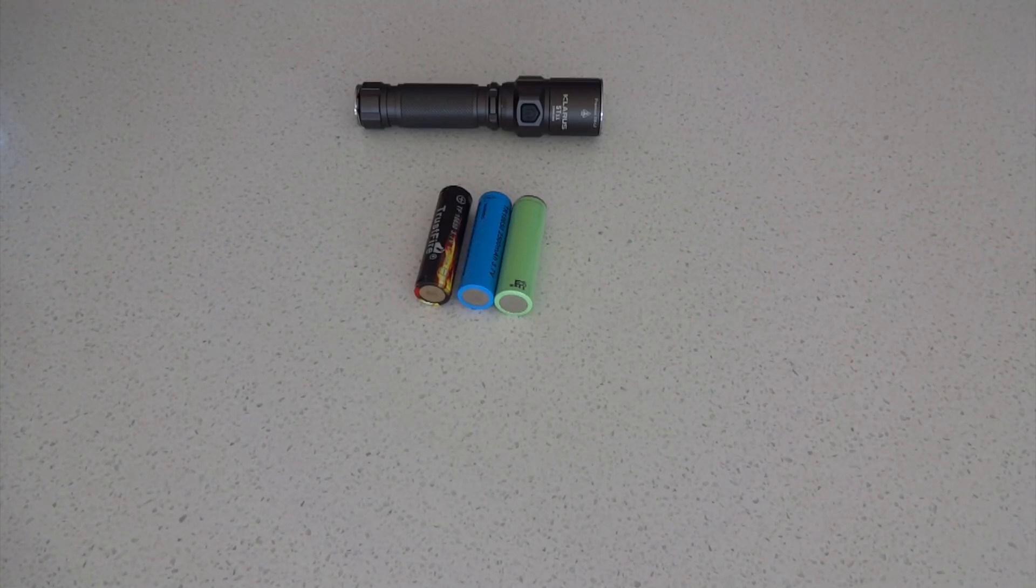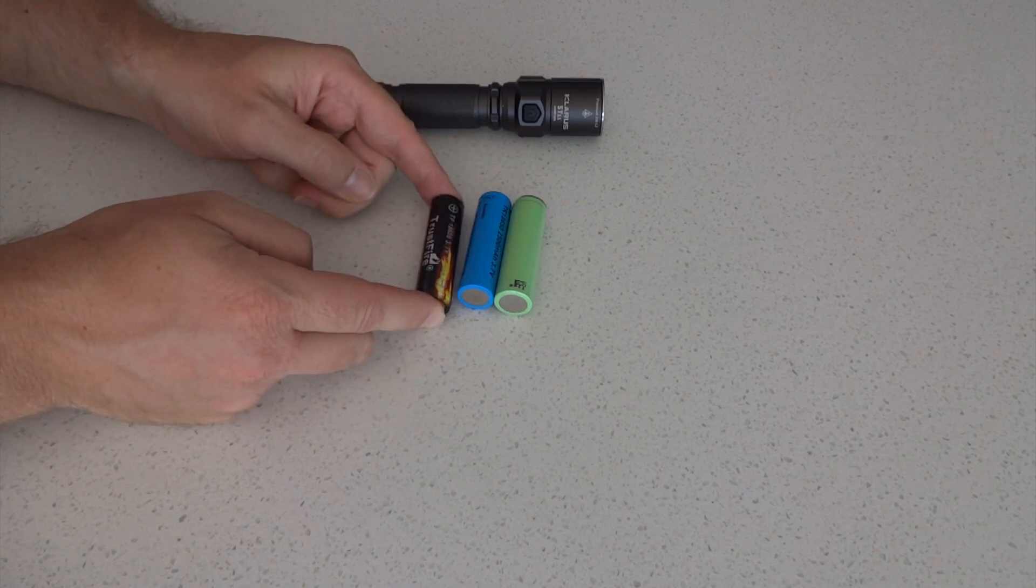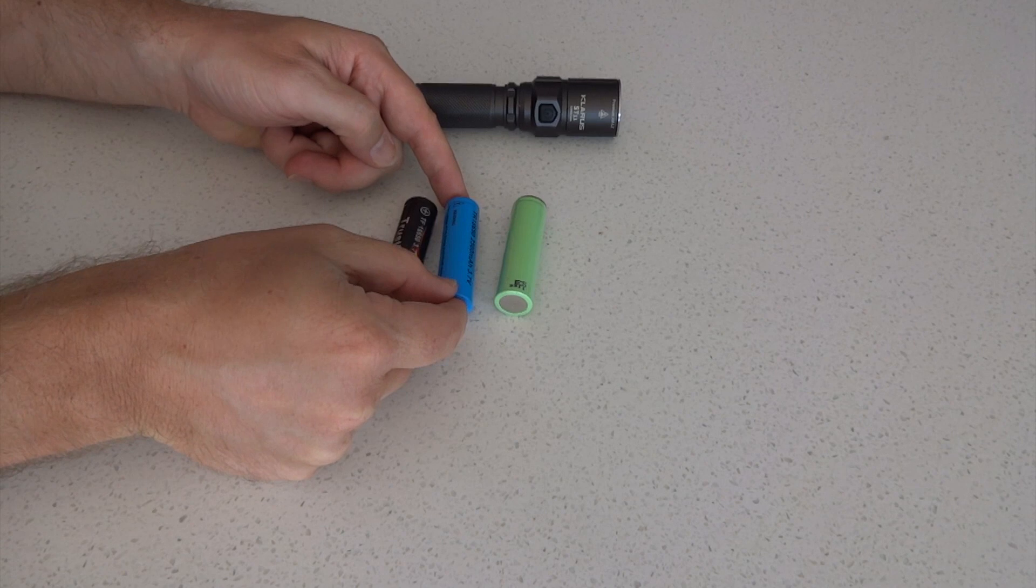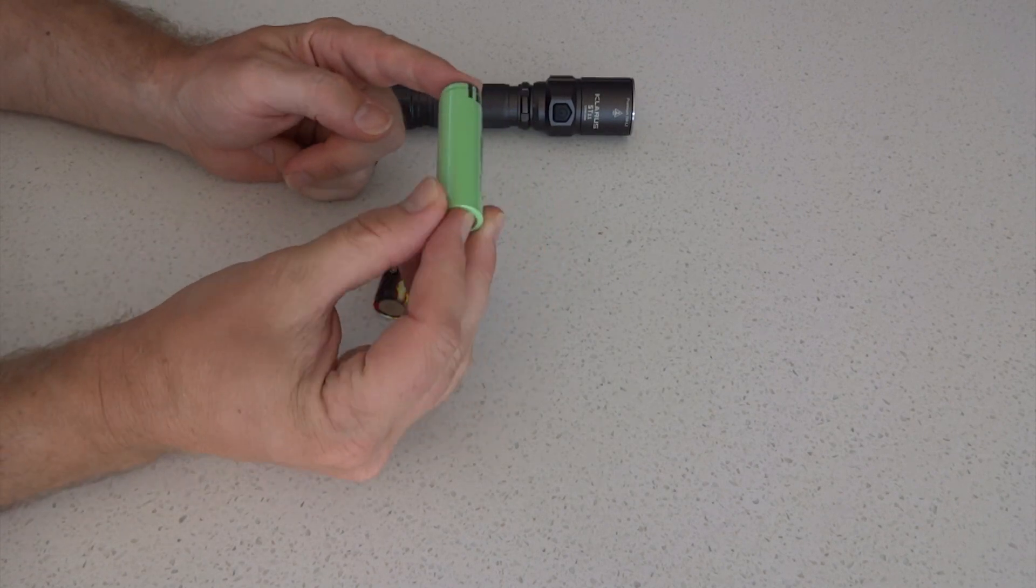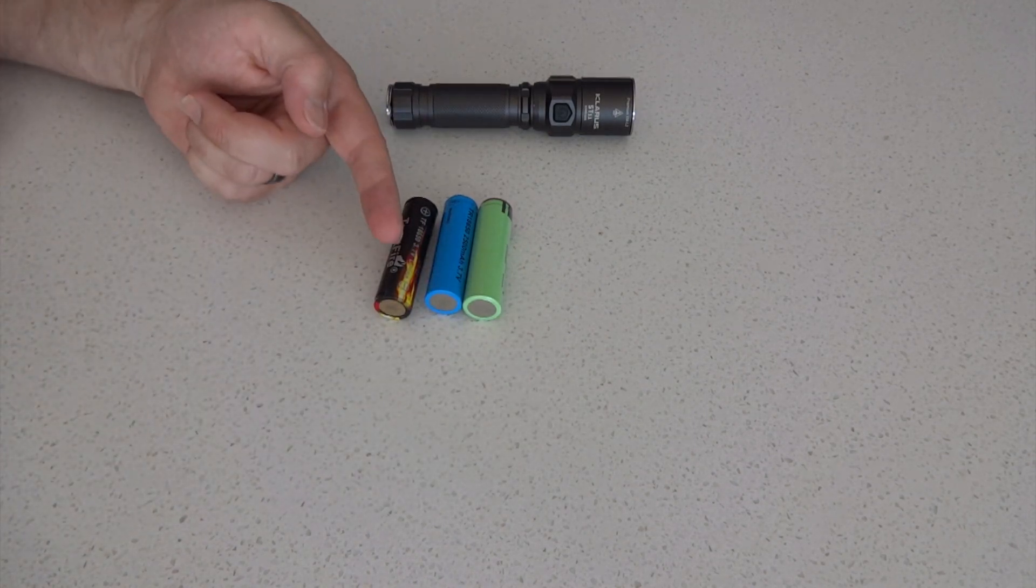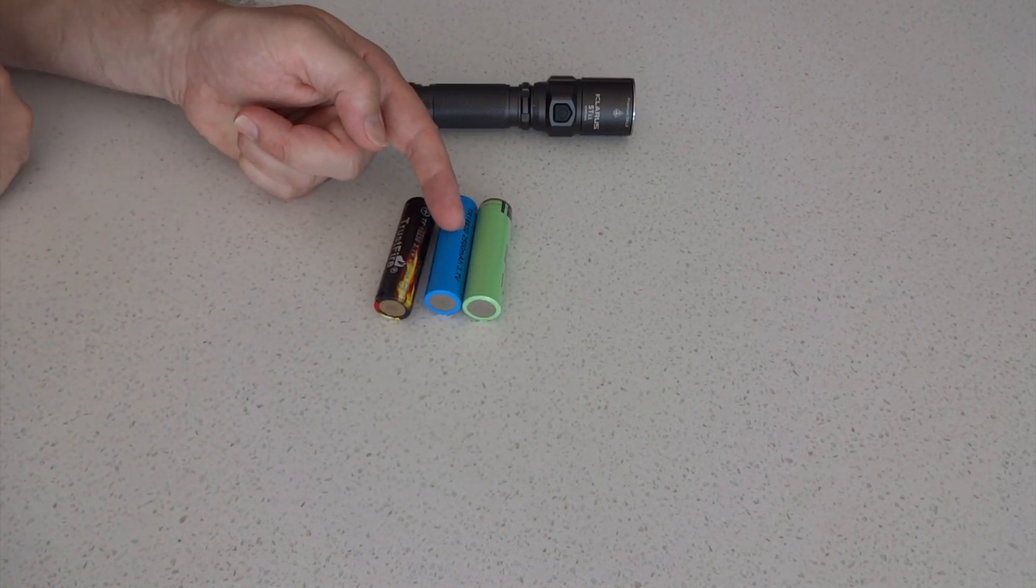We have three different types of 18650 batteries. We've got a TrustFire, we have an UltraFire, and then we have a Panasonic battery. I'm just going to show you the difference because the difference is quite significant. The first one is 2400mAh, this one's 2500mAh, and the Panasonic's only 2200mAh.